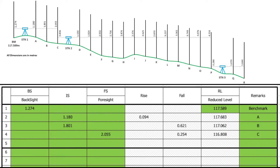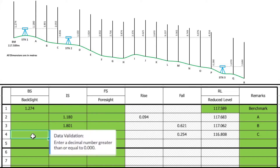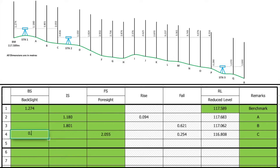The level is then moved, keeping the staff on point C. The level is repositioned at station two, and then another reading is taken again at point C. However, when the level has been moved, the next reading we take will be a backside reading for point C, entered under the backside column. Its value is 0.836. That means we have two readings for point C.